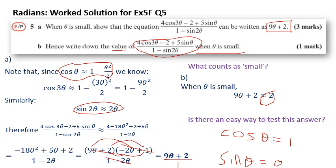Now, for the 9 theta plus 2, you might want to calculate it. But if you grab a calculator and do 9 lots of 0.1 plus 2, and then compare your answer to 4 lots of cos of 0.3, take away 2 plus 5 lots of sin 0.1 over 1 minus sin 0.2, you should find that comes out pretty close to the same thing as 9 times 0.1 at 2. So you can try it with numbers. You can check that everything works the way it should.